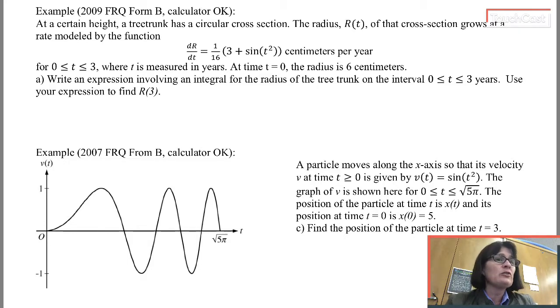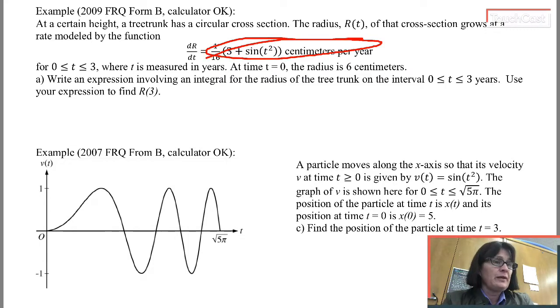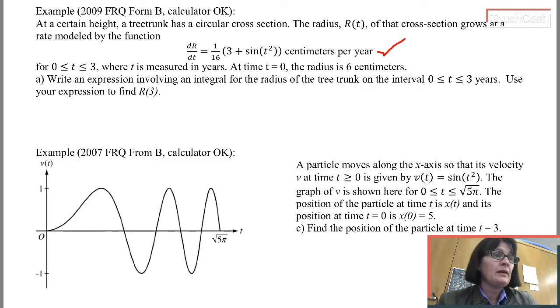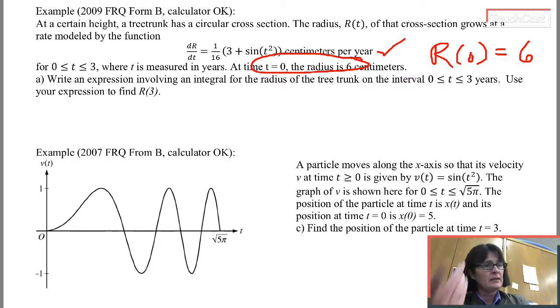Part A, write an expression involving an integral for the radius of the tree trunk on the interval 0 to 3 years. T is the input variable. We want to write a function whose input is T and that gives the radius at any time. It is not this function. That is not a function for the radius of the tree trunk. That's a function for how fast the radius is changing. We're going to have to write a function whose derivative is dr dt, and for which we need r of 0. We need the radius of the tree trunk at time 0 to be 6. We're going to use this technique that we just saw above.